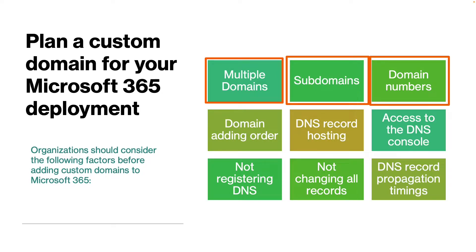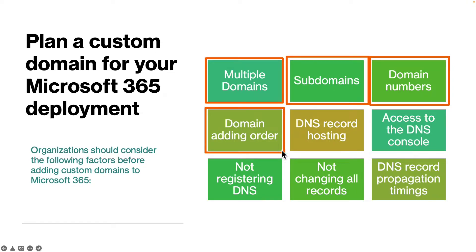Another consideration is domain numbers. An organization can register up to 900 domains with Microsoft 365, which is plenty of domains available within a single tenant. Another common question is about the domain adding order — the root domain must be added before sub domains.